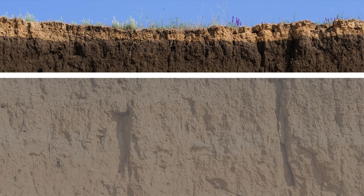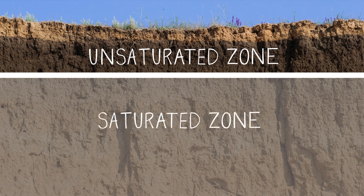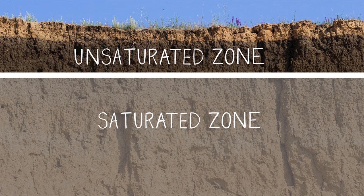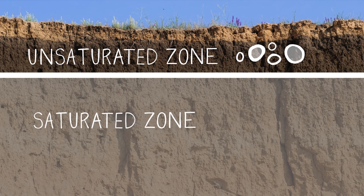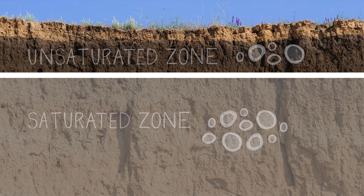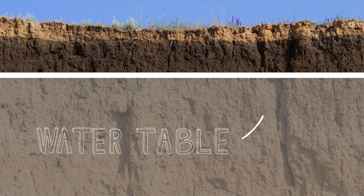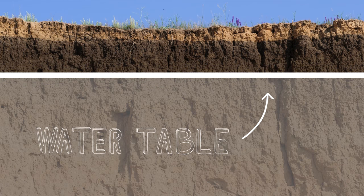Water that collects underground is held in an upper unsaturated zone and a lower saturated zone. The unsaturated zone is located directly beneath the land surface, and the pore spaces hold both air and water. In the saturated zone, all the open spaces are filled with water. The water table is the very top of the saturated zone and the bottom of the unsaturated zone.